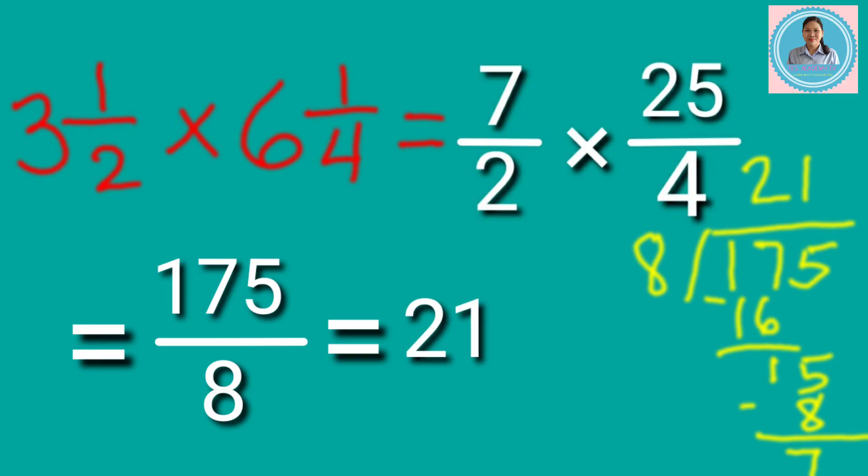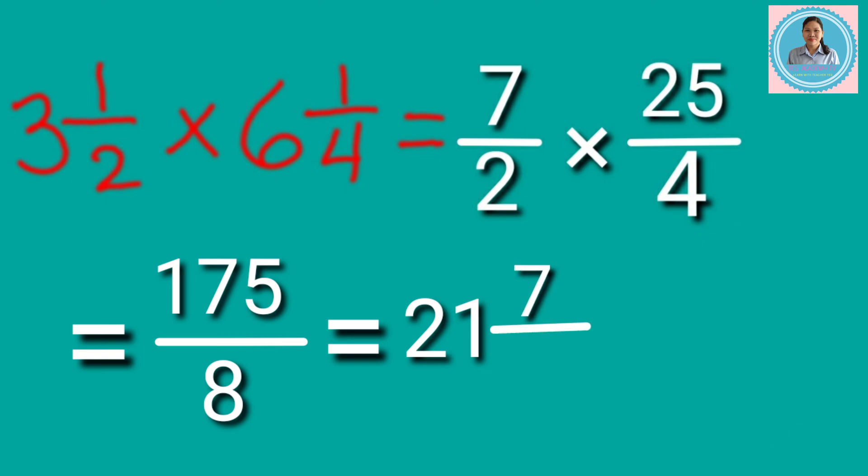And the remainder is 7. The remainder is the numerator and the denominator is 8. So, the answer is 21 and 7 eighths.